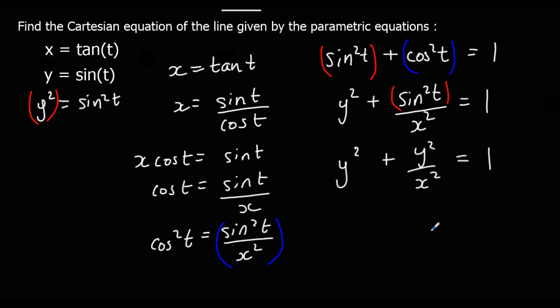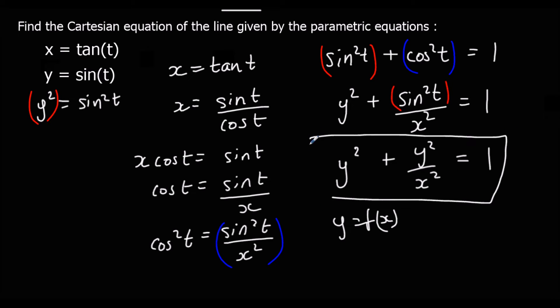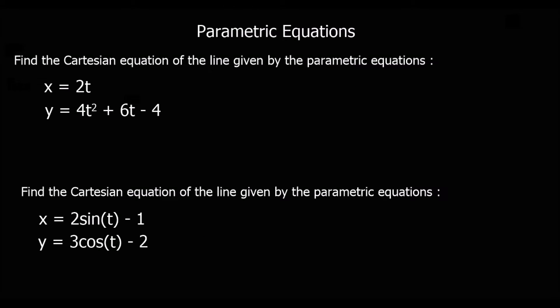We could leave the equation as y² + y²/x² = 1, or rearrange to the form y = f(x) if required. We weren't asked for a specific form, so we'll leave it as is. We've eliminated t and obtained our Cartesian equation.